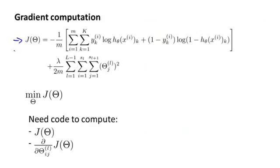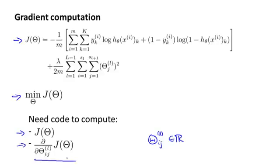Here's the cost function that we wrote down in the previous video. What we'd like to do is try to find parameters theta to try to minimize J of theta. In order to use either gradient descent or one of the advanced optimization algorithms, what we need to do is write code that takes as input the parameters theta and computes J of theta and these partial derivative terms. Remember that the parameters of the neural network are theta superscript l, subscript ij. In order to compute the cost function J of theta, we just use this formula up here. And what I want to do for most of this video is focus on talking about how we can compute these partial derivative terms.